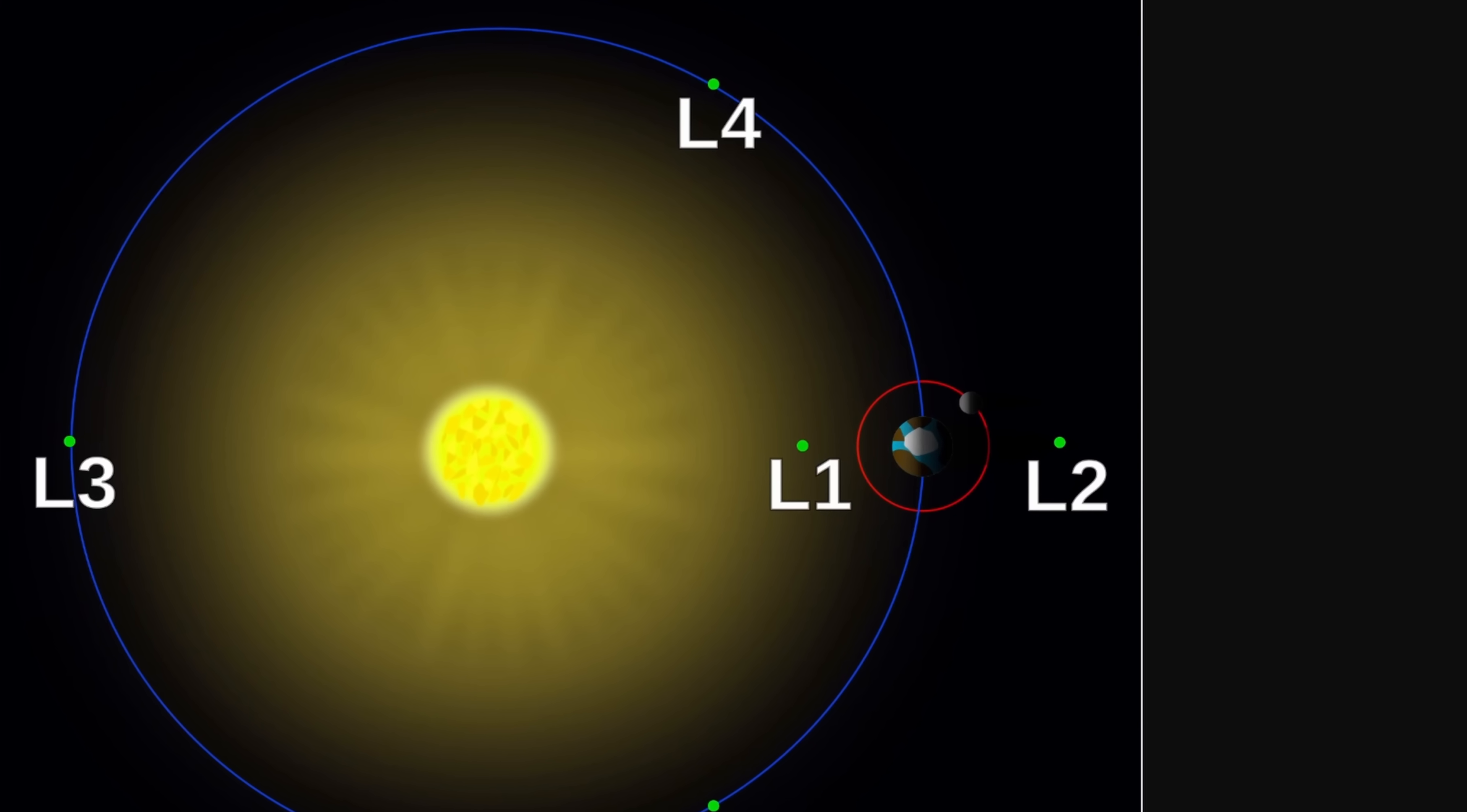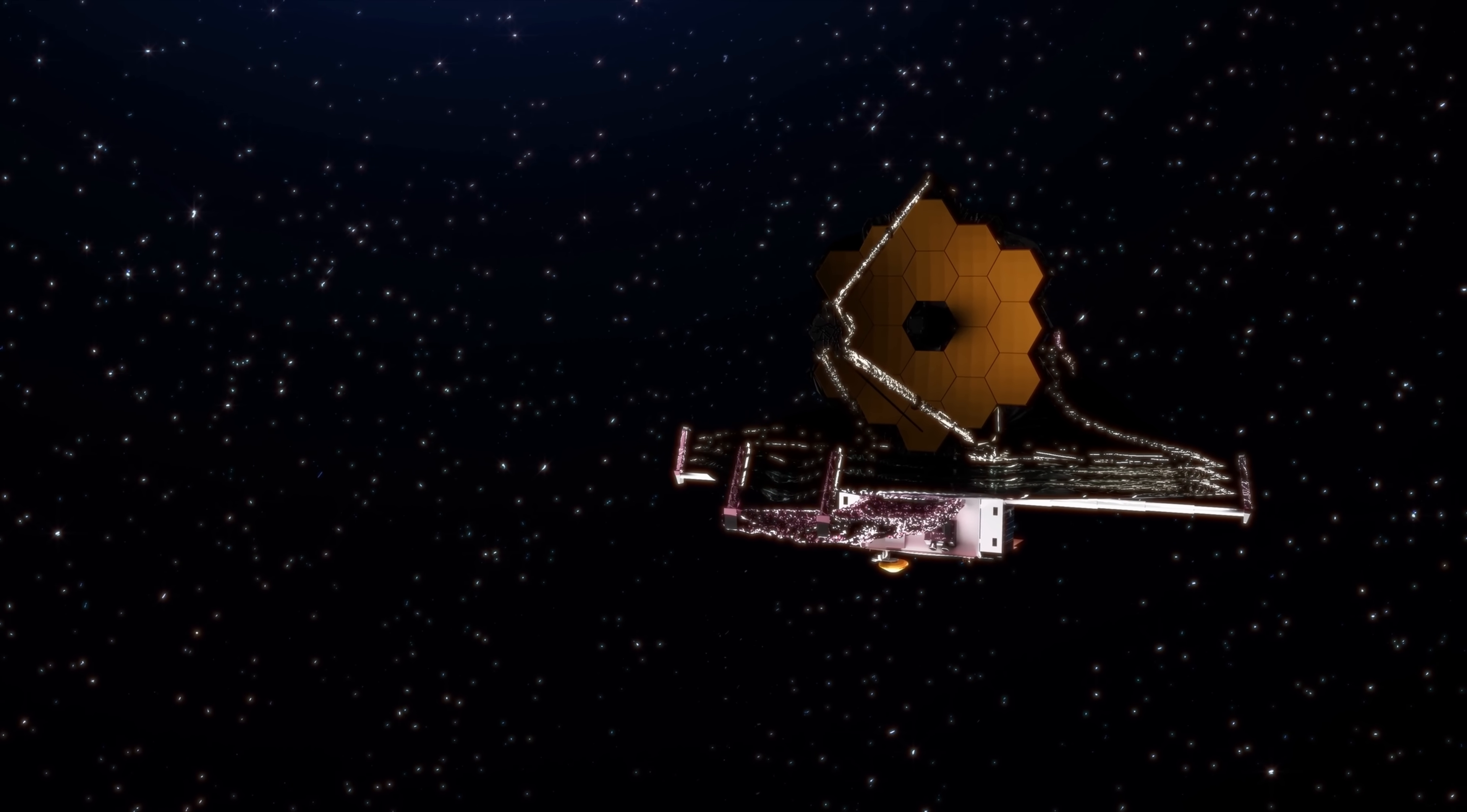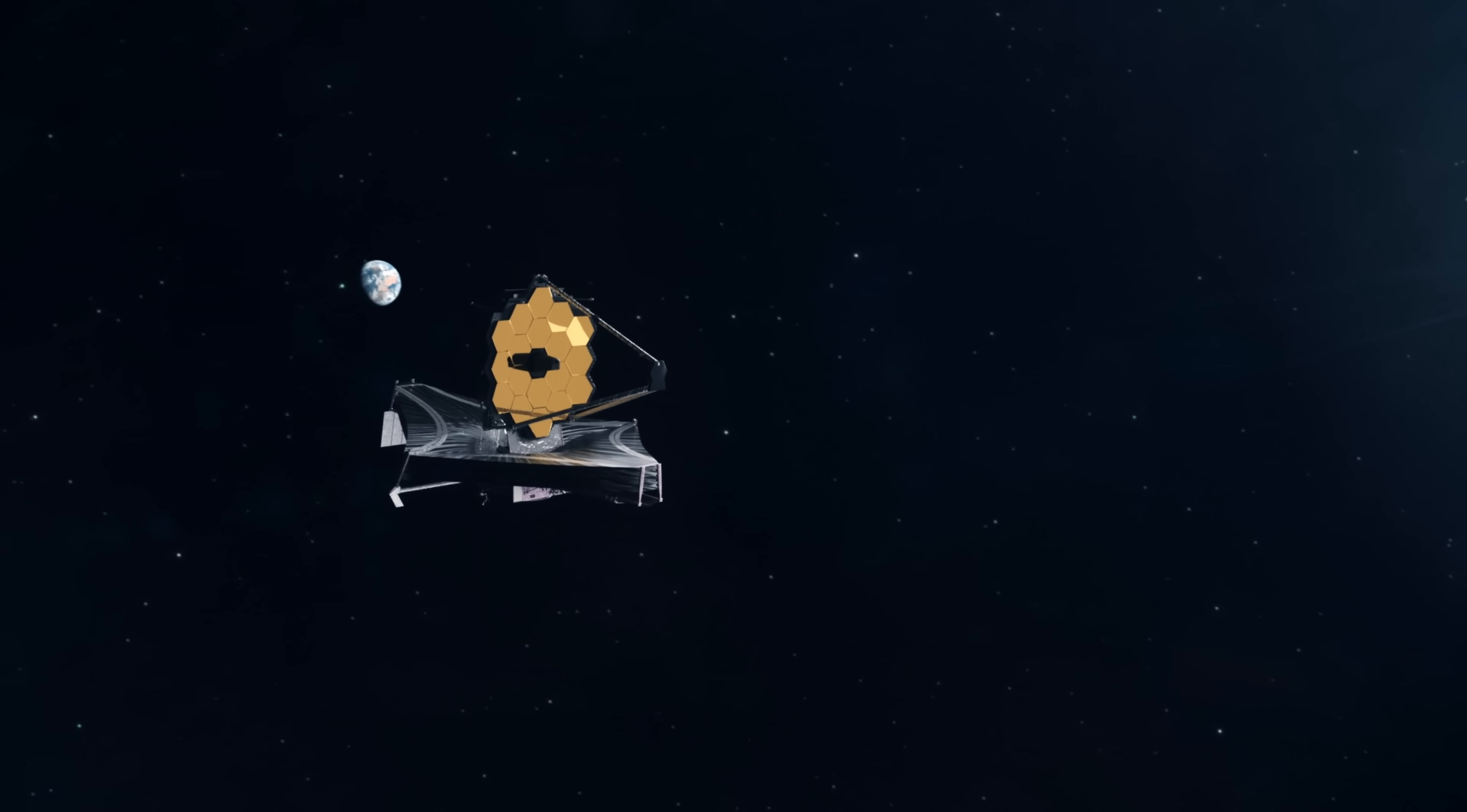You might already know about the Lagrange points, but in essence there are five points around every single planet where an object can actually have a relatively stable orbit. For example telescopes like the James Webb and the Gaia telescope all currently orbit in the L2 point, where they can basically stay for years and years only using a little bit of fuel to maintain a permanent stable orbit.